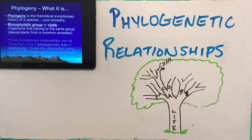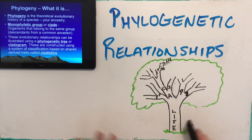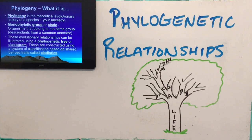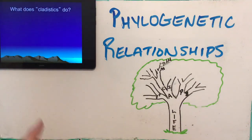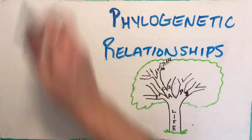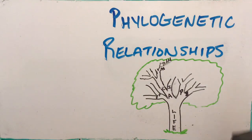These evolutionary relationships illustrated in the tree of life can be shown using either a phylogenetic tree or a cladogram. We're going to be building cladograms today and doing them as an assignment later on. What we use to build these things and show relationships is a system of classification based on shared derived traits called cladistics — a cladogram is based on cladistics. But before we get into that, I want to go over how a phylogenetic tree is set up, because it's another way of showing these relationships.